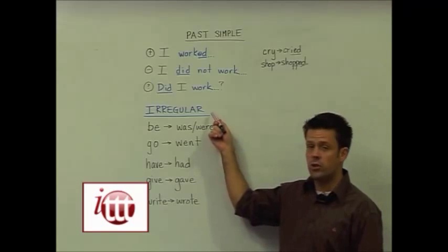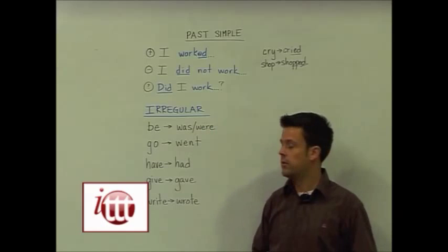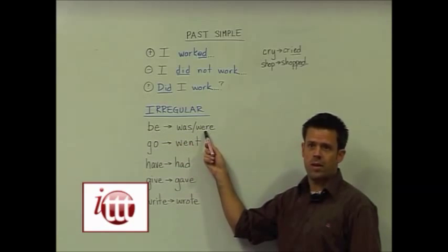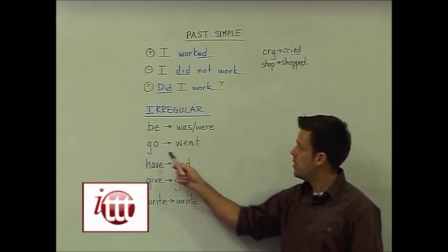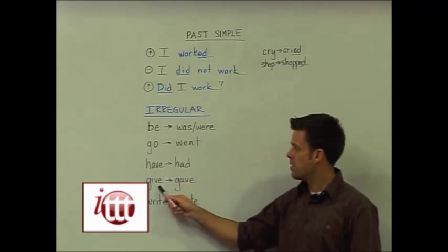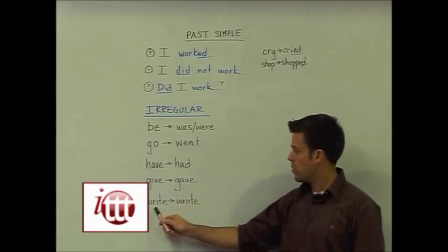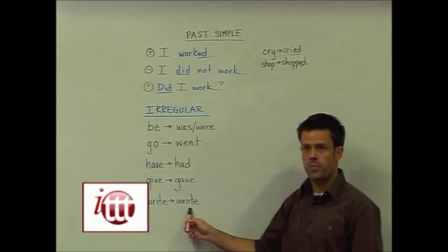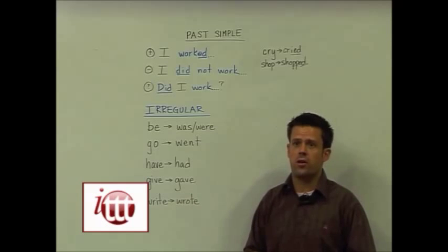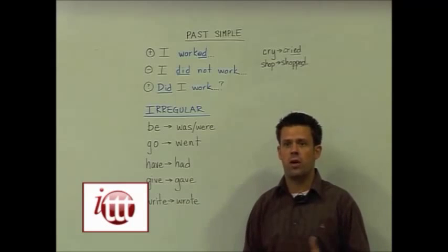Our irregular verbs change their form altogether. So, a few examples would be: be, going to was or were, depending on the subject of the sentence. Go to went. Have to had. Give to gave. Write to wrote. Of course, there are further irregular verbs, which I encourage you to look up in your materials, or either online.